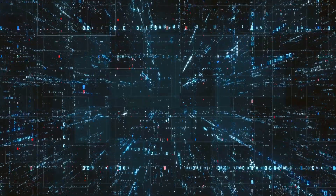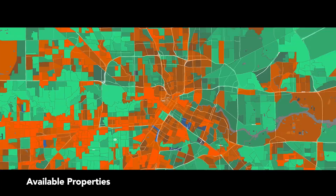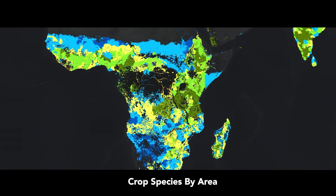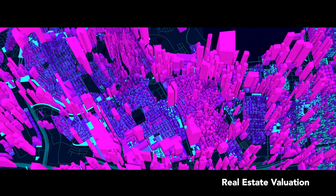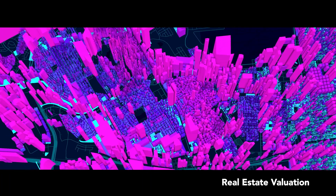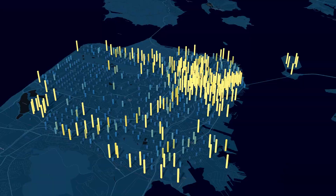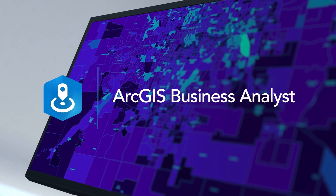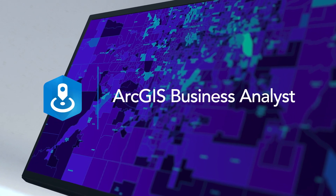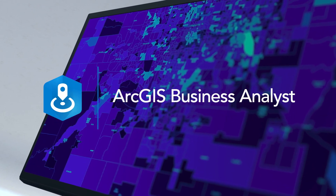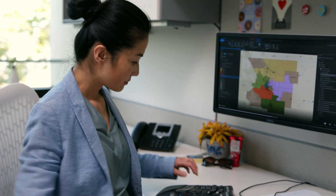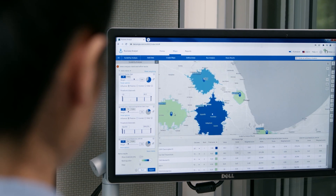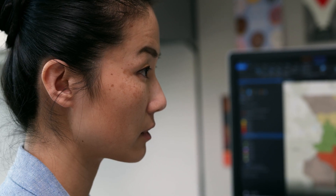Since more than 80% of data is location data, when it's on a map, answers become clear. It's simple to do with Esri's ArcGIS Business Analyst — a powerful, easy-to-use tool that lets you use the most advanced location technology on the market for business analytics.